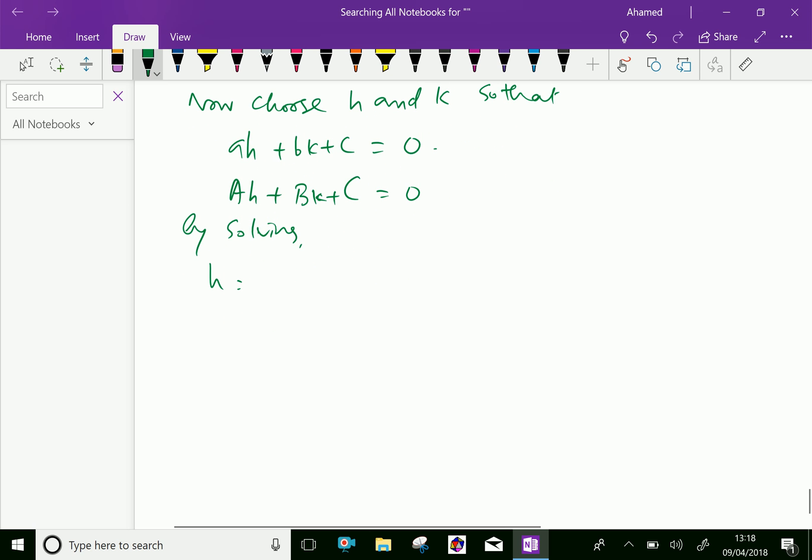h equals, by cross multiplying, bc minus bc over ab minus ba, as well k equal ca minus ac over ab minus ba.